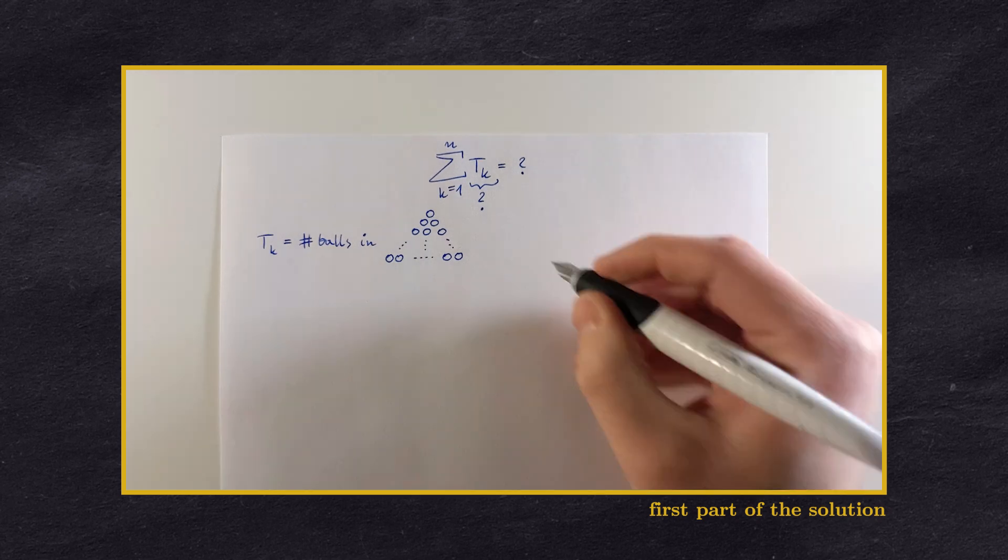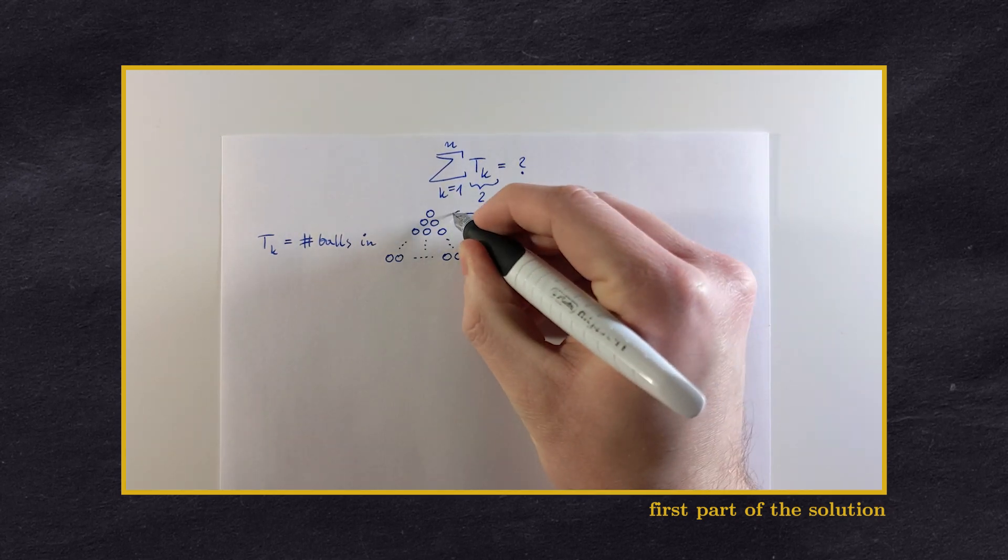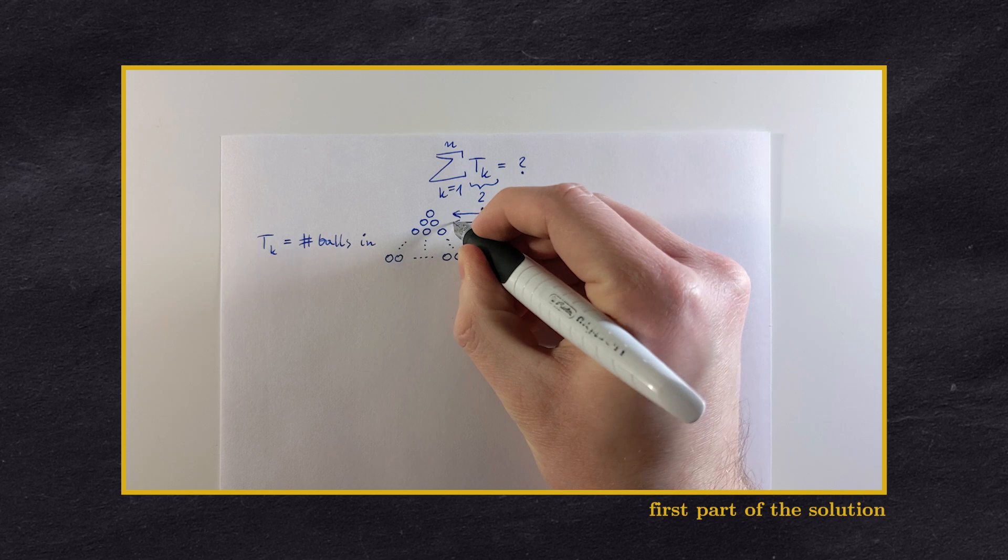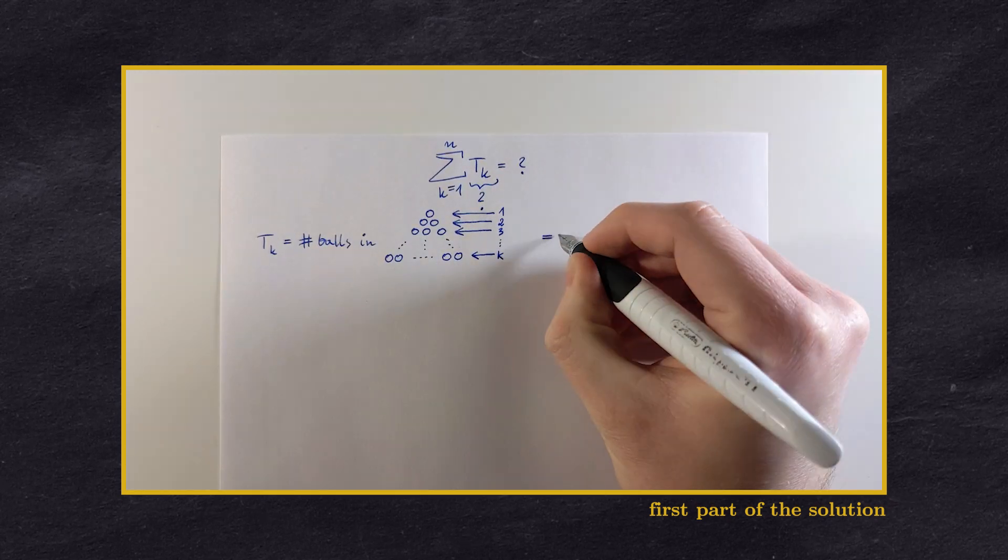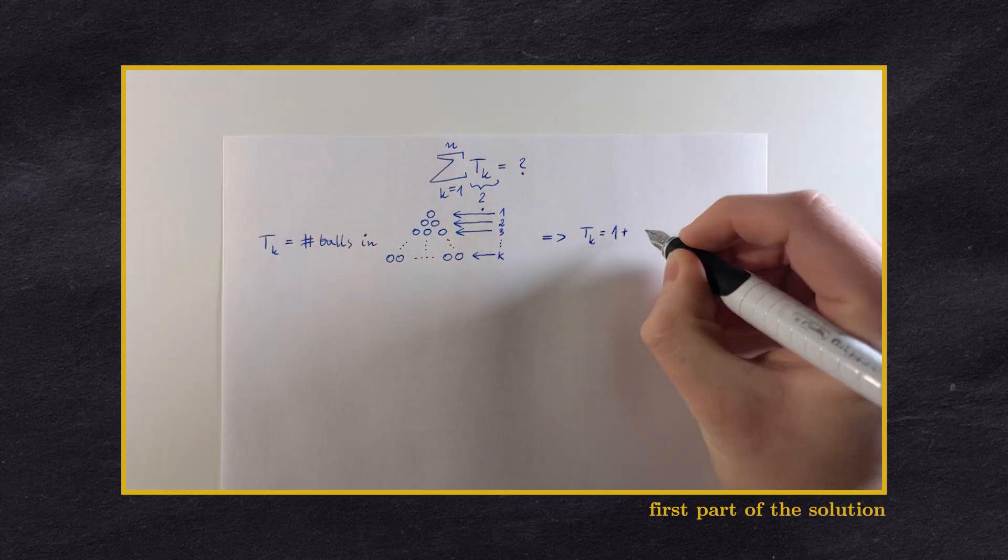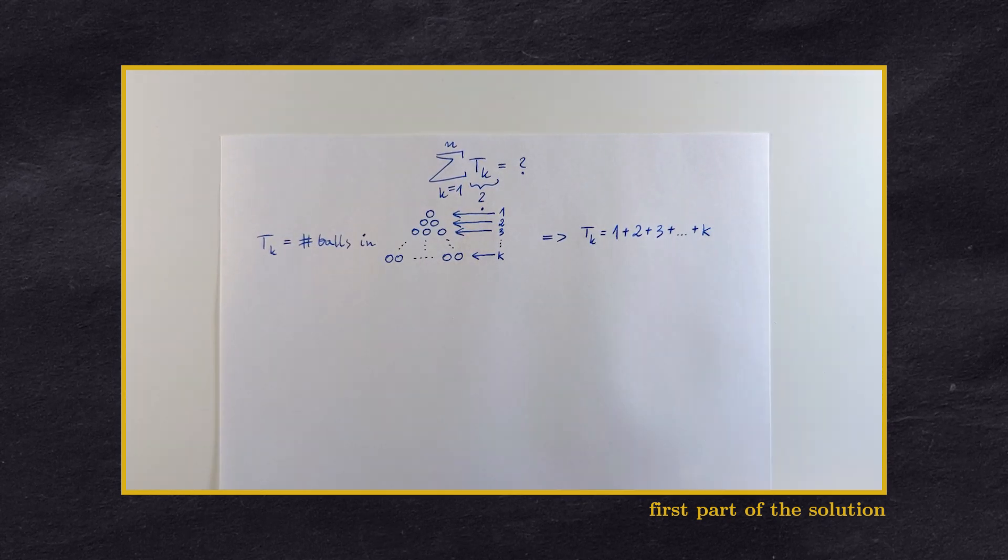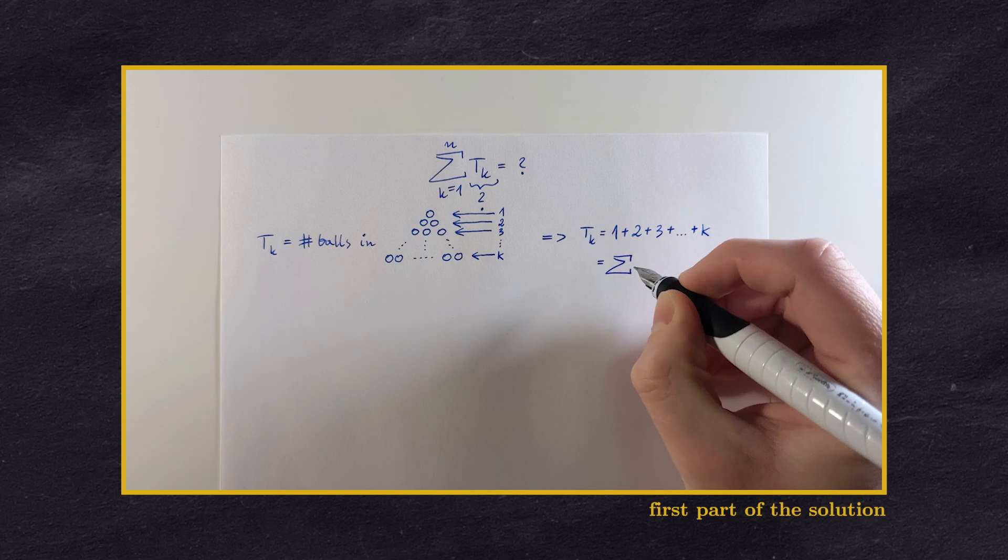By going layer by layer, we can see that tk is simply equal to 1 plus 2 plus 3 plus dot dot dot plus k. This is simply a sum of the first k natural numbers.